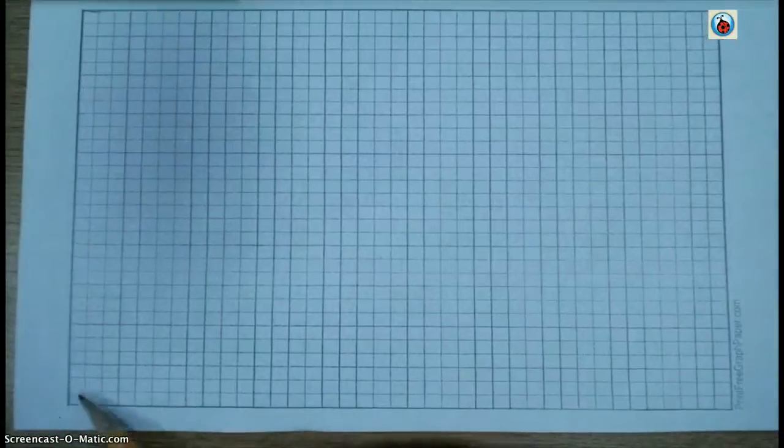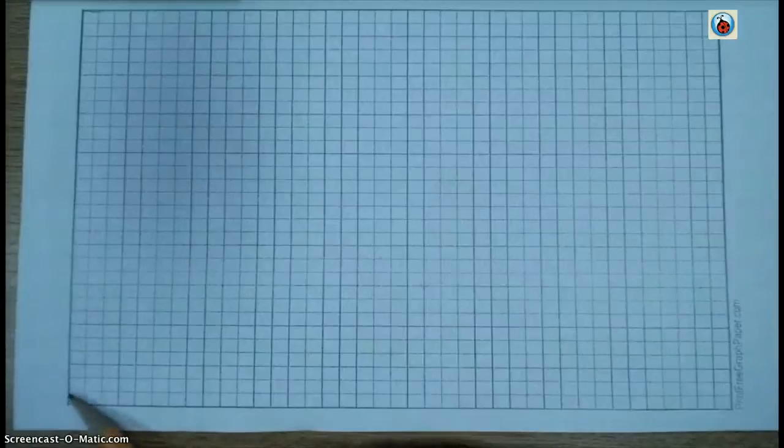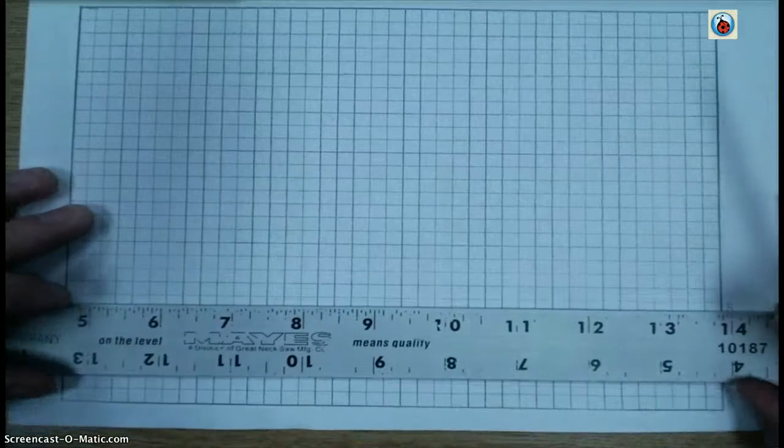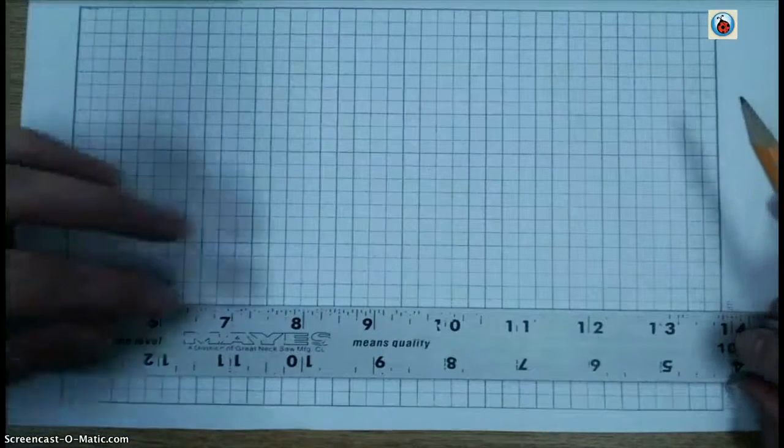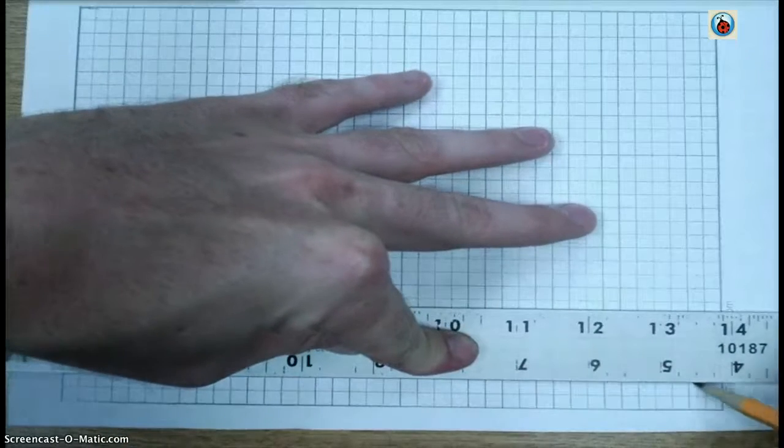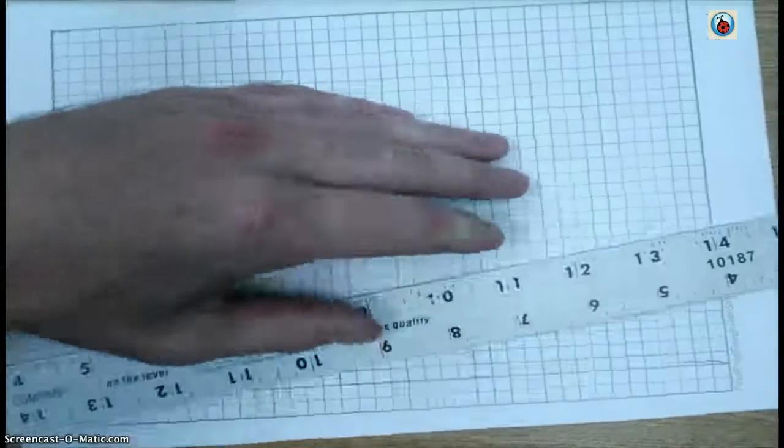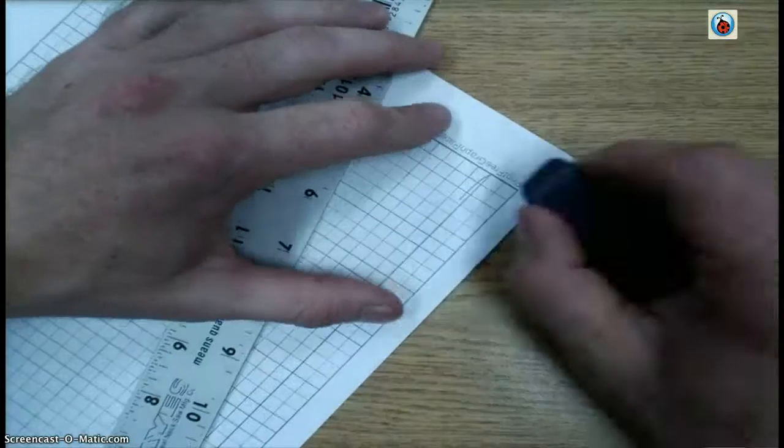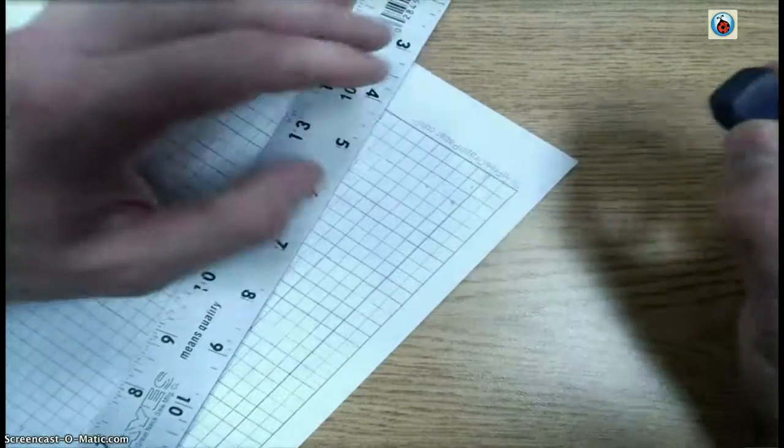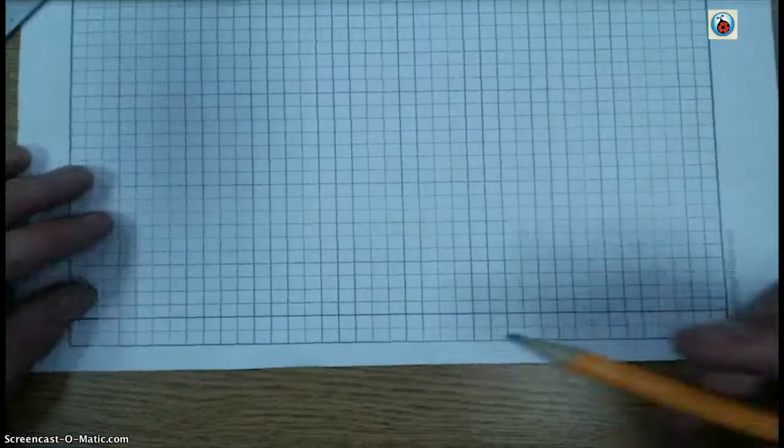This one's bordered. Now I need to start my title blocks. From the bottom, I'm going to count up two squares—one, two. I'm right here and I'm going to fill that line all the way across with my ruler. This is the same line weight, the same heaviness and thickness, as the border lines.